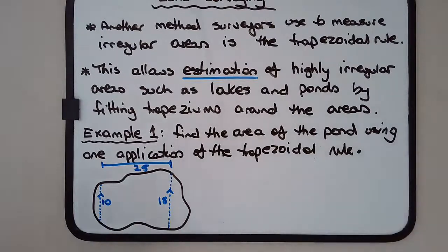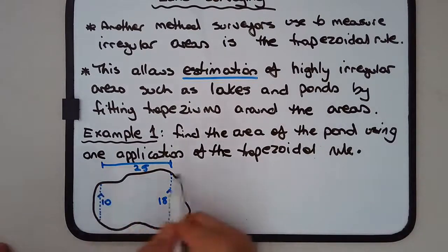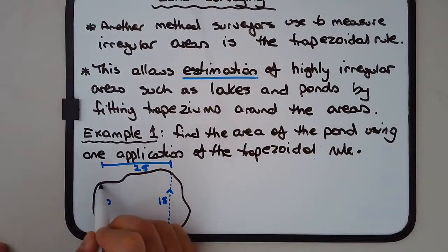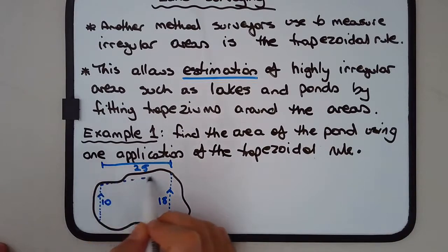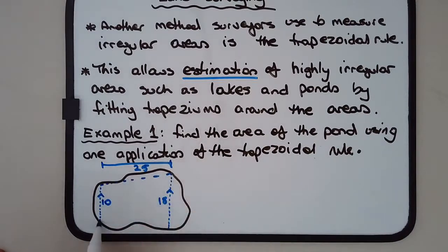This allows the fitting of a trapezium. If we draw a line, I'll draw another dotted line that way and another dotted line this way. You can see that we can fit a trapezium. It's probably not the most accurate, but we can fit a trapezium and get an estimation of the area, which is better than nothing at all.